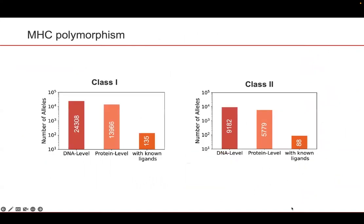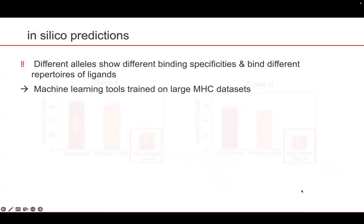In addition to the different characteristics between MHC class 1 and 2, MHC 1 and 2 genes show a very high degree of polymorphism and thousands of different alleles have been documented. However, only a few hundred alleles have available ligands. As a result of this polymorphism, different alleles show different binding specificities and bind different repertoires of ligands. Many researchers capitalize on large MHC datasets to train machine learning tools to predict MHC ligands that could be recognized by T-cells.